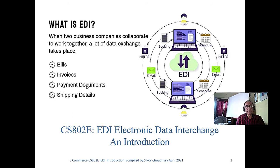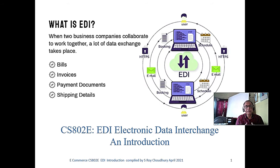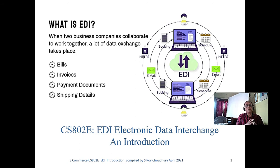EDI basically started in the 1970s and 80s in the United States, Europe, Germany, and countries like Japan. The big companies were each other's supplier vendors, so instead of manual orders, they preferred computer-to-computer communication.